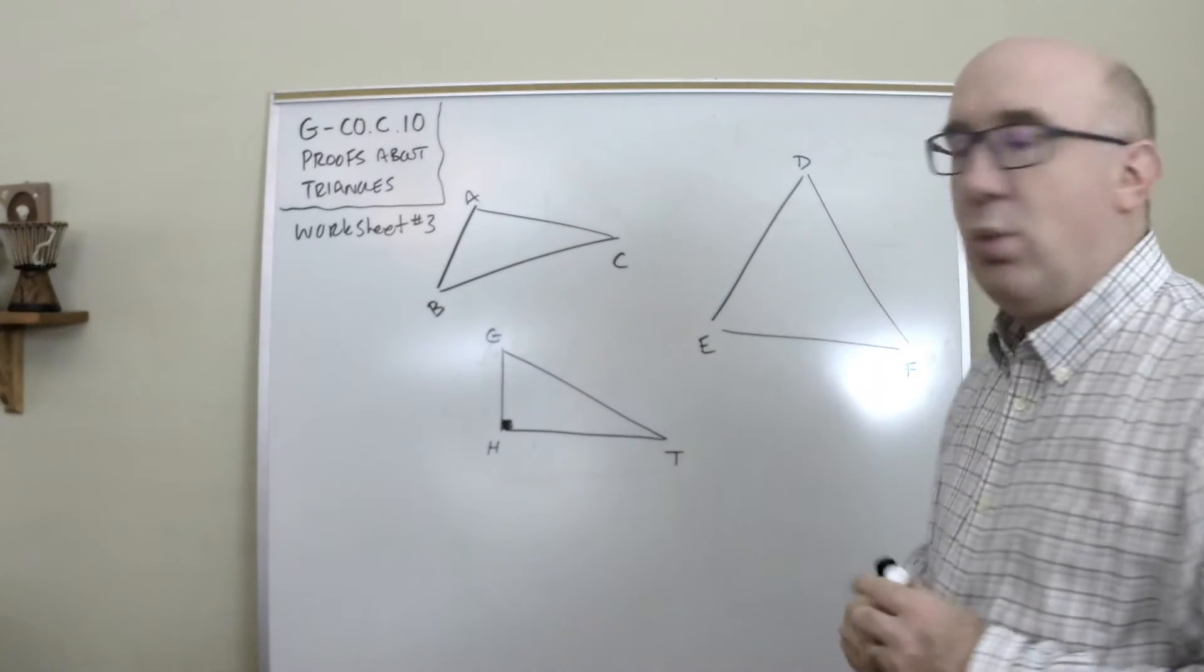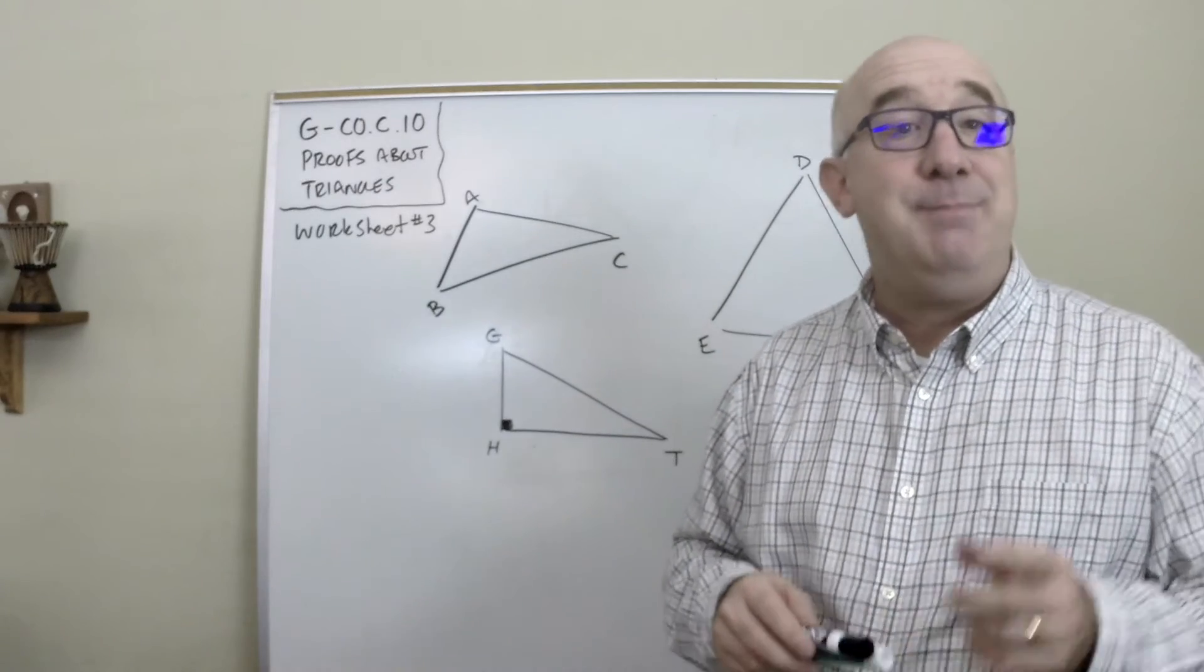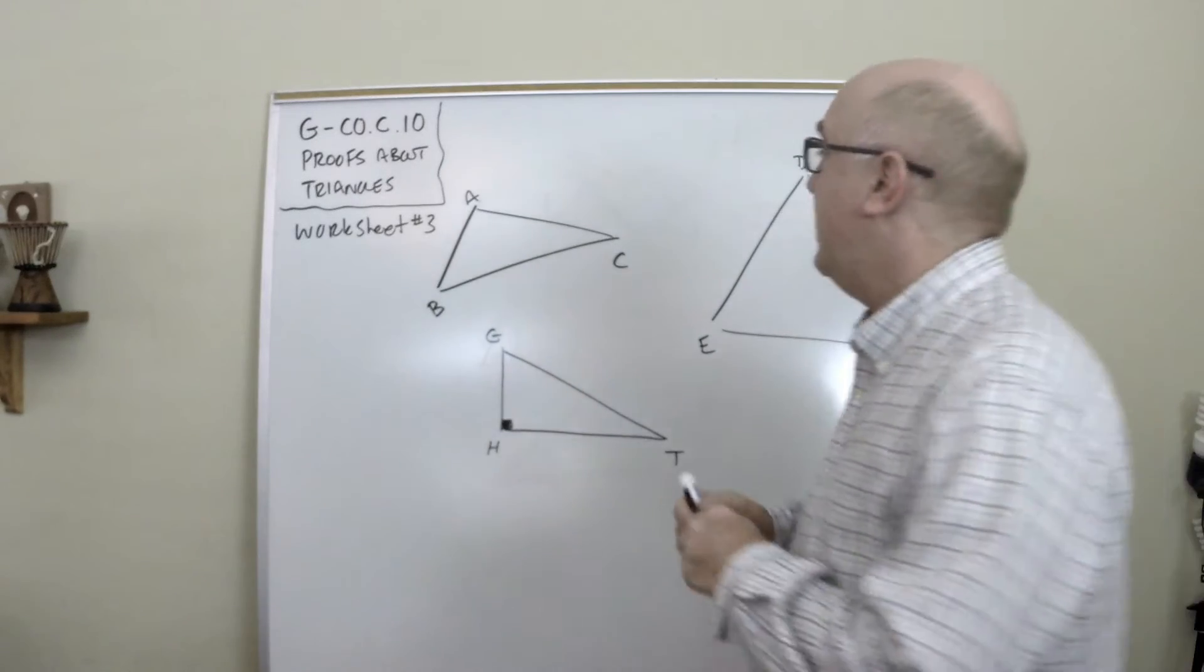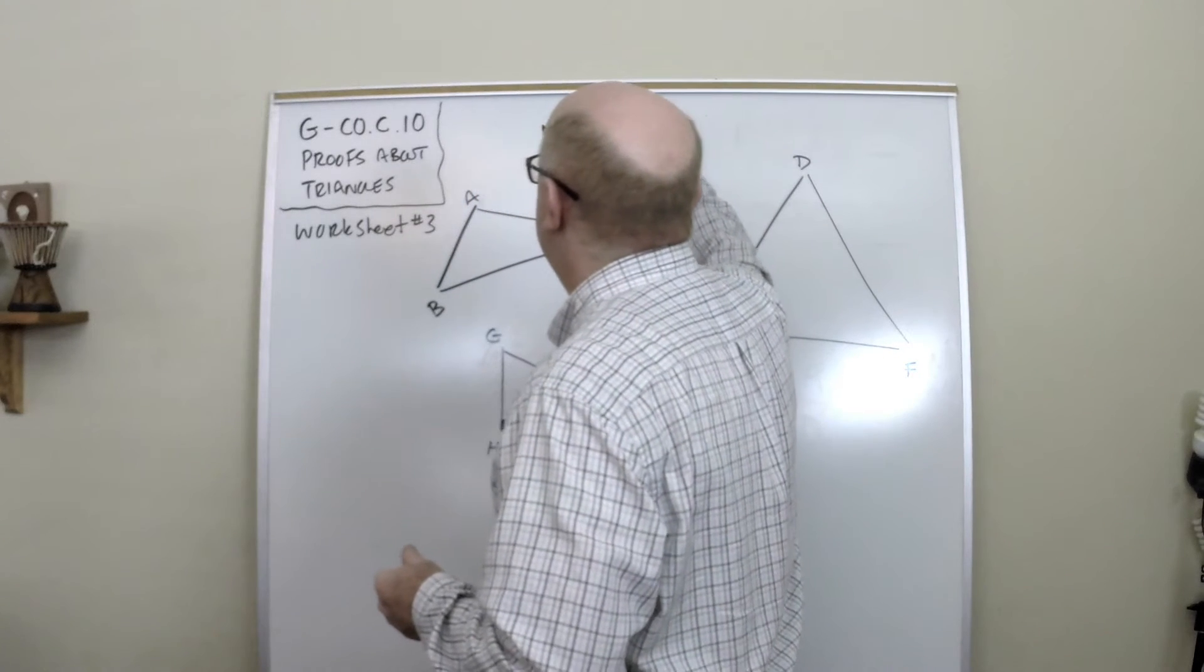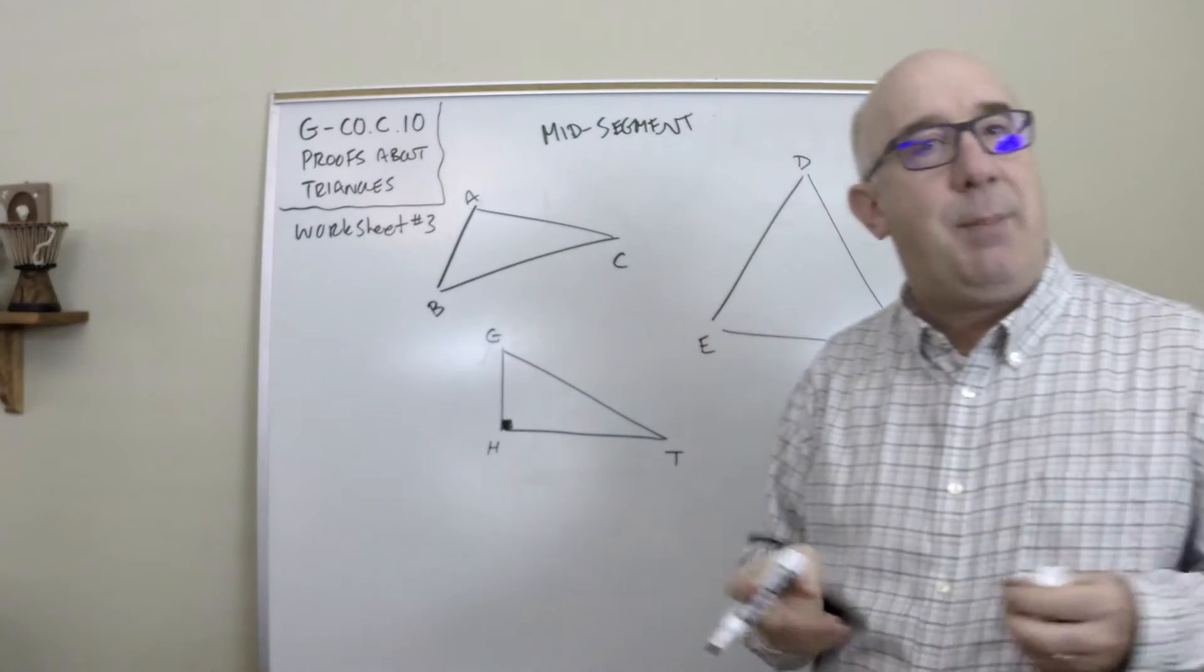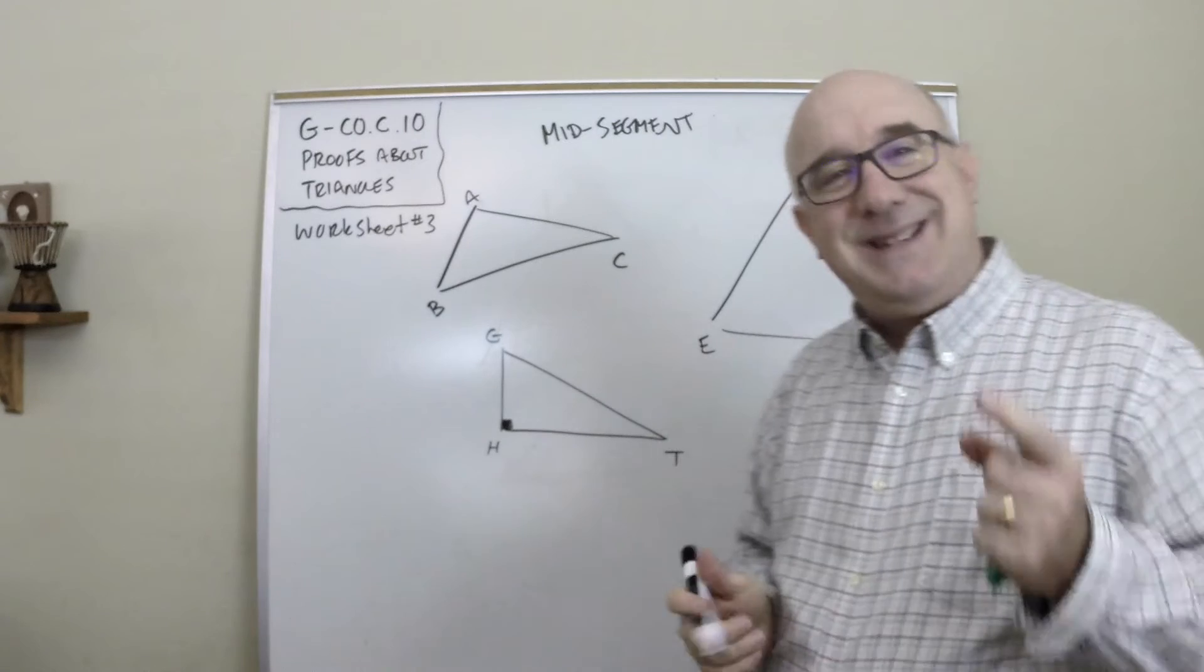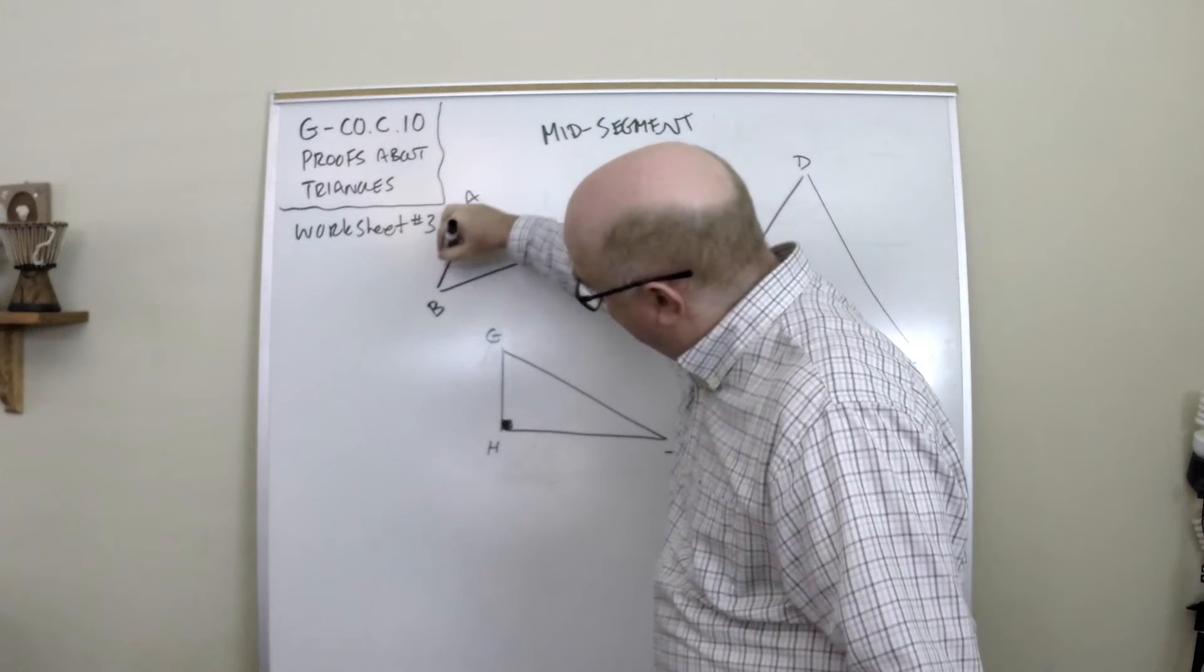Here is one more nice little relationship found in a triangle, and it deals with something called a mid-segment. A mid-segment is probably a new term to you, but it shows up in different shapes, and its properties are basically this, that a mid-segment is the connection of two midpoints.